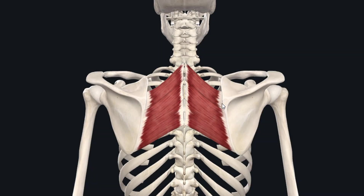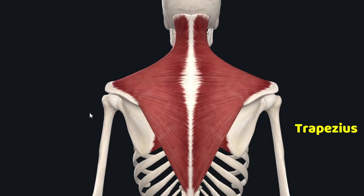These two muscles connect the medial border of the scapula to the vertebral column. In this way, these muscles hold the scapula to the thoracic wall. As you can see, the rhomboid muscles lie deep to the trapezius muscle.